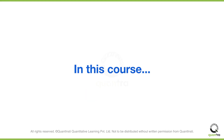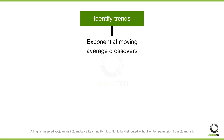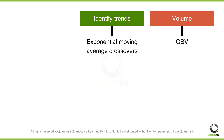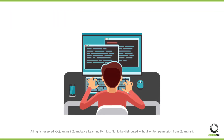In this course, we cover indicators that help you identify price trends, such as exponential moving average crossovers. You will also learn to use indicators that use volume information, such as on-balance volume indicators. Finally, we will learn to analyze market breadth indicators such as the Trend indicator. You will not only understand the logic behind these technical indicators, but also create and backtest trading strategies in Python.